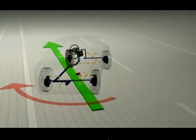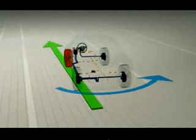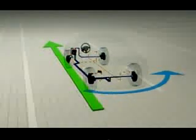In this case, ESP brakes the left front wheel. The torque is reduced. Instead of going into a skid, the car stays on course thanks to ESP.